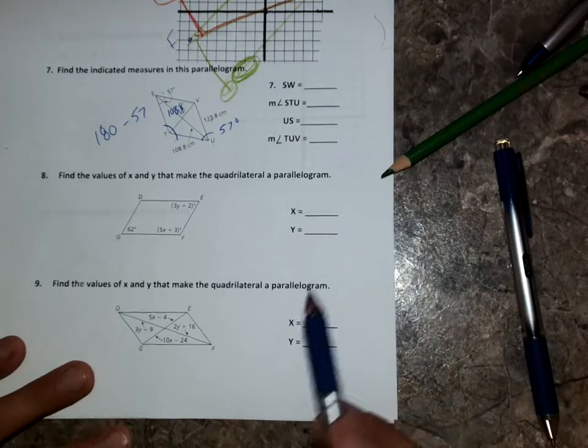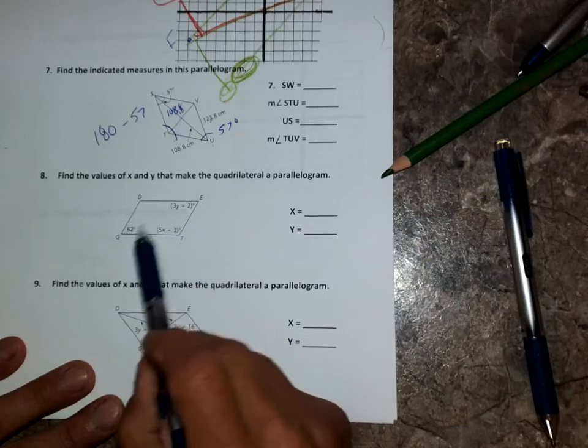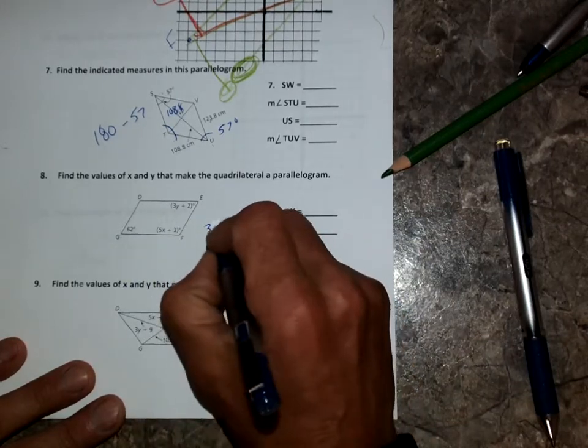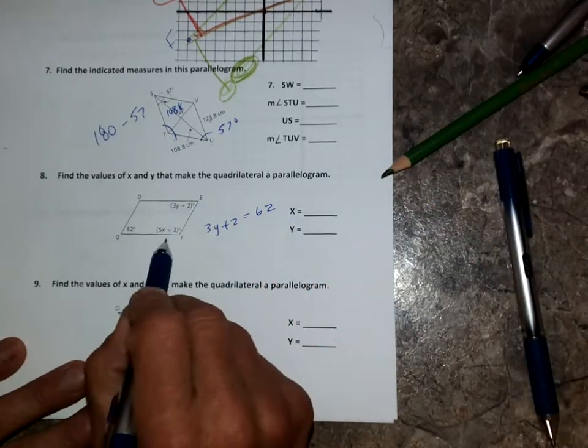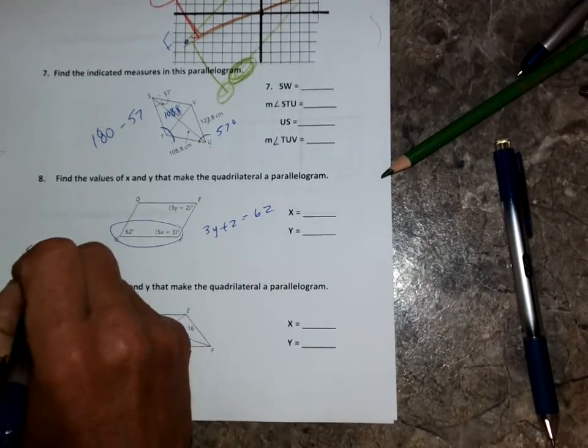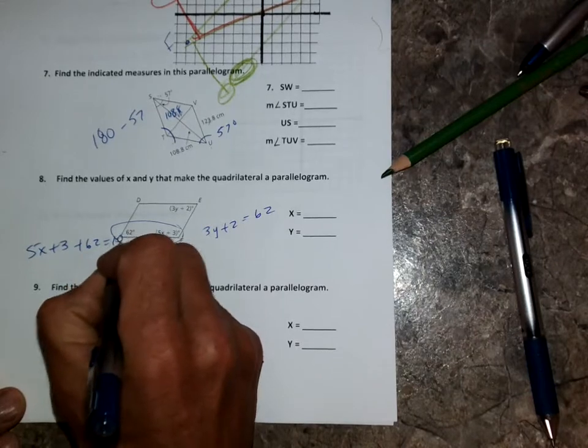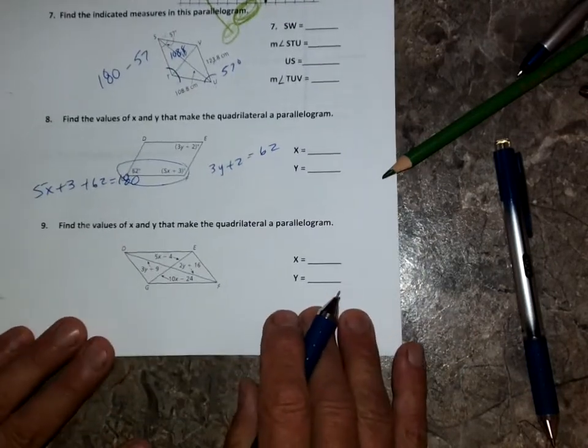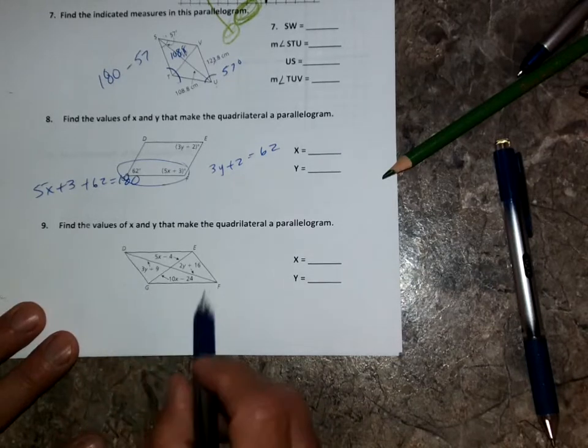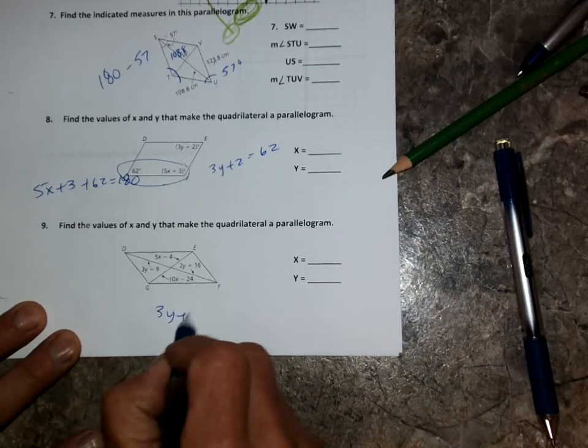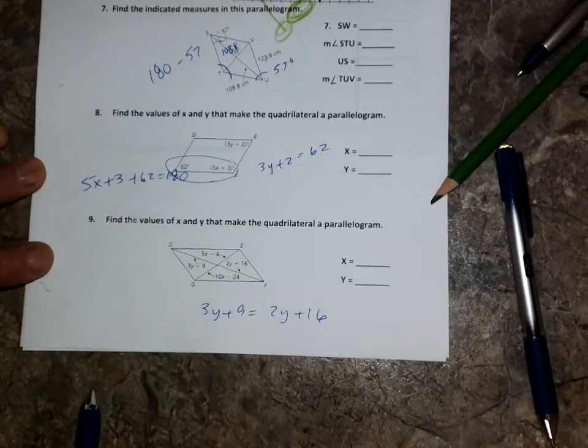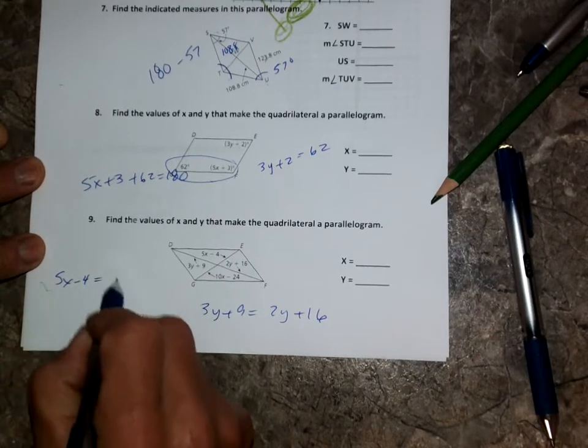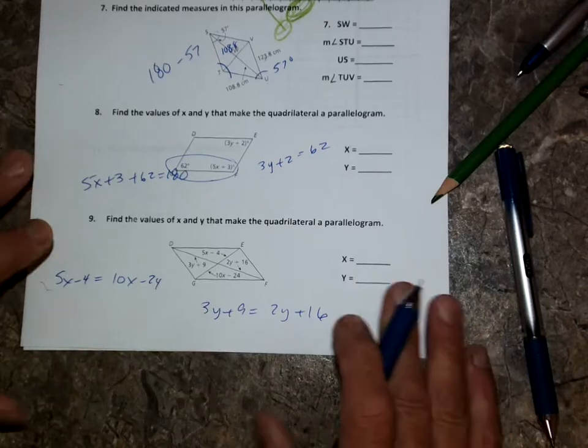So in number eight, first of all, what I would do is probably set these two equal because they're opposite angles. So I'd take my 3Y plus 2 and set it equal to 62 and solve. And then once I get that, I know that these two are going to be supplementary. So you can also take it right here. 5X plus 3 plus 62 equals 180. Solve for X. Nine, diagonals are equal, so you just set this equal to that. So you need the value of X and Y. So 3Y plus 9 equals my 2Y plus 16. And we can also set up our 5X minus 4 equals our 10X minus 24. And solve for X.